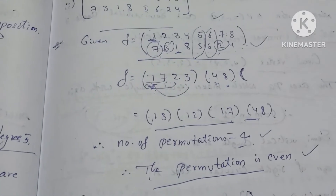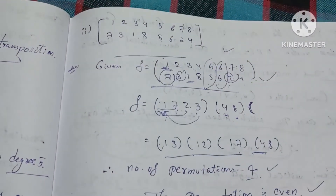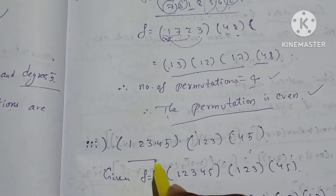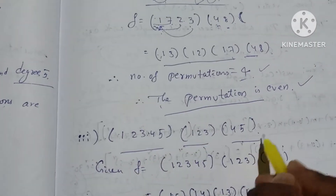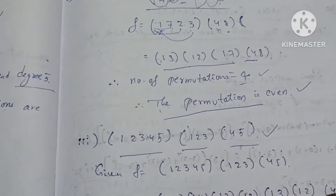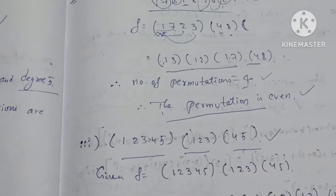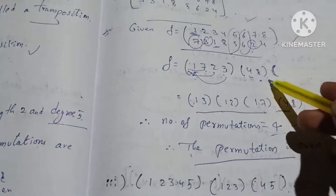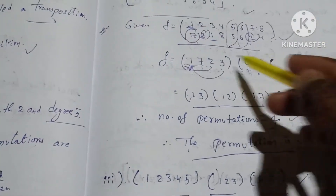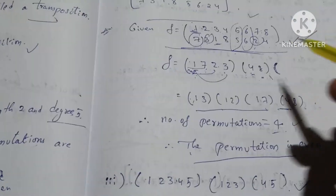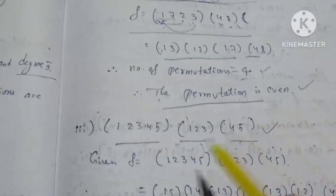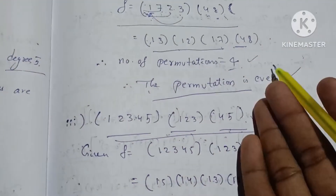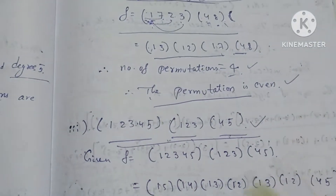So let's talk about this — the permutation system, that is the cycle system. Cycle system: (1,2,3,4,5) and (1,2,3,4,5). This permutation is even. Permutation system is even. Direct cycles — cycles is set up. We will first start transpositions.